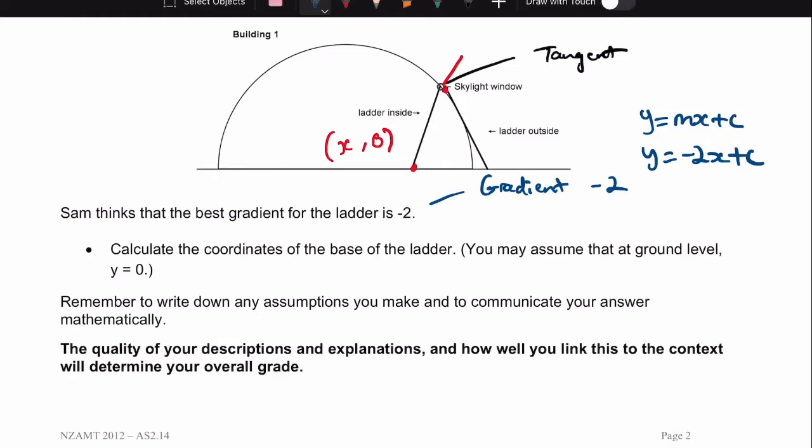And then remember the circle's formula was x squared plus y squared equals 49. So now we go into our notes.